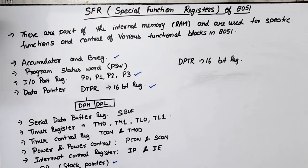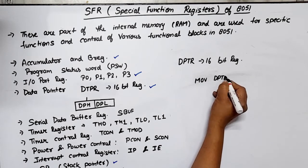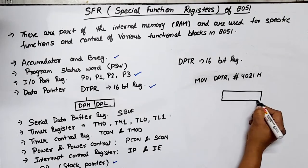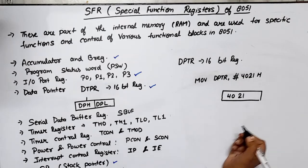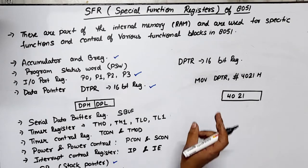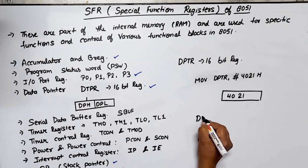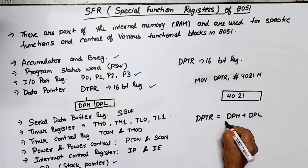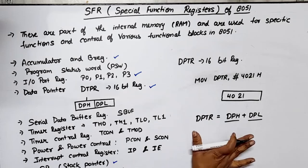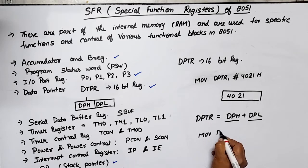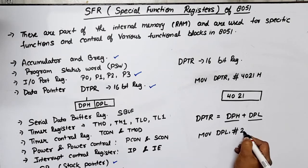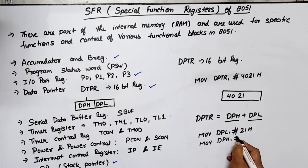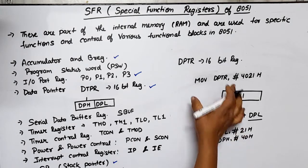For example, MOV DPTR, #4021h means the content of DPTR will be 4021h. DPTR can also be used as two 8-bit numbers: DPTR = DPH + DPL (Data Pointer Higher byte + Data Pointer Lower byte). The same operation can be written as: MOV DPL, #21h and MOV DPH, #40h.